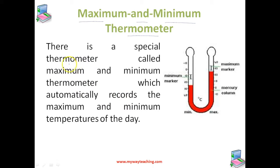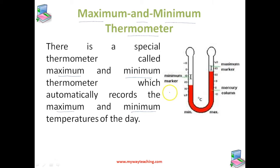There is a special thermometer called the maximum and minimum thermometer. This thermometer automatically records the maximum and minimum temperatures of the day. You can see a maximum marker and a minimum marker on it. It is used in weather forecasting and meteorological work where we require the maximum temperature as well as the minimum temperature in a day.